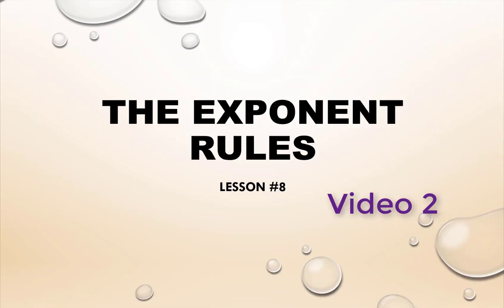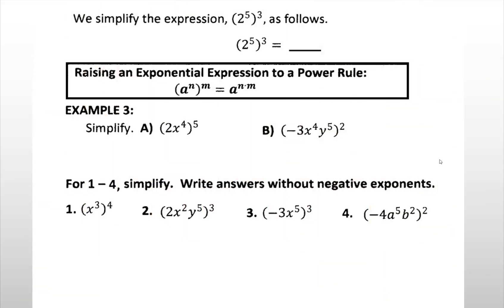A shortcut to raising an exponential expression to a power is to multiply the exponents. For example, 2 to the fifth, to the third, is 2 to the 5 times 3, which is 2 to the fifteenth. The formula is: a to the n, to the m power, is equal to a to the nm.